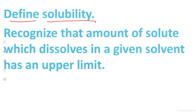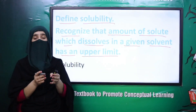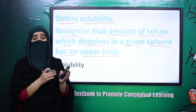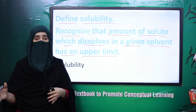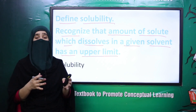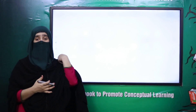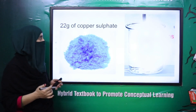Next is: define solubility and recognize that the amount of solute which dissolves in a given solvent has an upper limit. Hainne dekha ki solubility kya hai — maximum amount of solute that can dissolve in 100 grams of solvent. Solute ki dissolve hone ki ability, that is solubility. Aur joh maximum amount dissolve hoti hai, that is the upper limit of the solute.